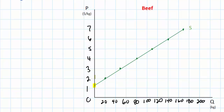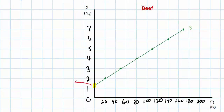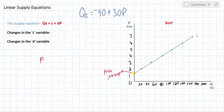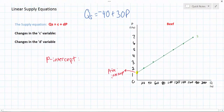What I want to show you now is how to calculate the price intercept of supply using the supply equation. The price intercept is the point at which the supply curve starts. This represents the price at which producers of beef would be willing and able to start providing beef, which is of course greater than zero because no producers can afford to grow beef at a price of zero.